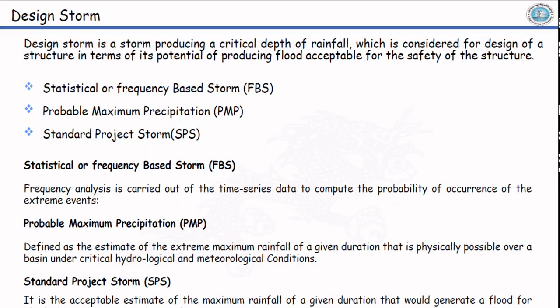With this, the last section of the unit is design storm. Design storm is the storm value magnitude that we use for design purpose. As a definition, design storm is a storm producing a critical depth of rainfall which is considered for design of a structure in terms of its potential of producing flood acceptable for the safety of the structure. There are three types of design storm: statistical or frequency based storm, probable maximum precipitation, and standard project storm.